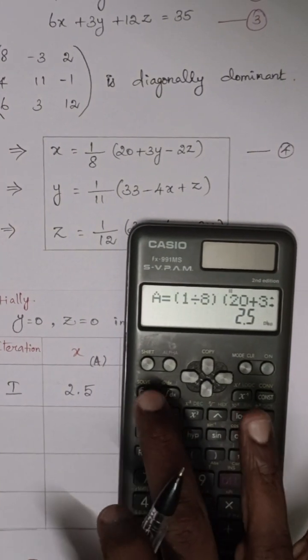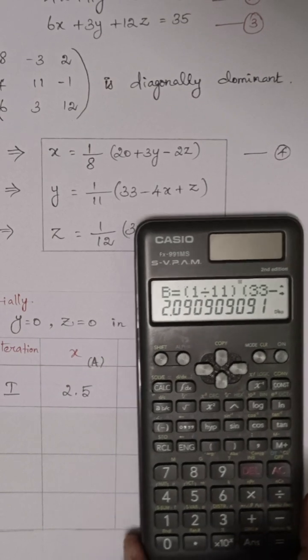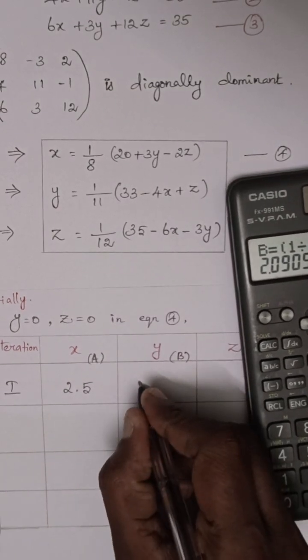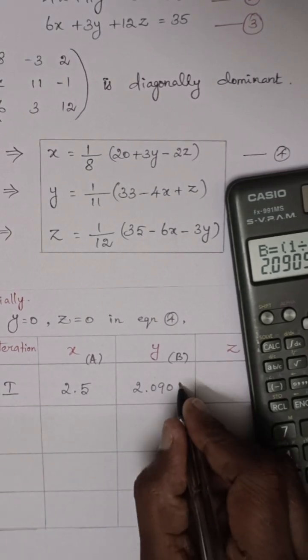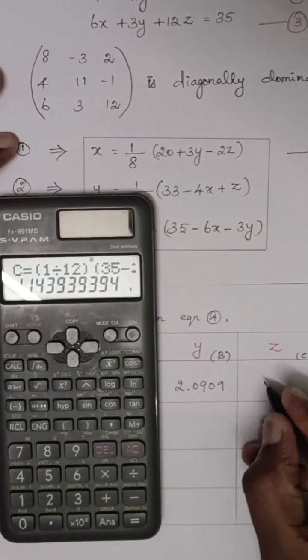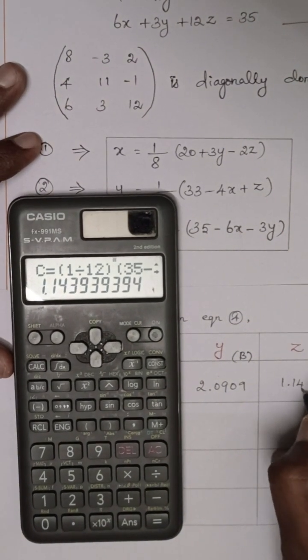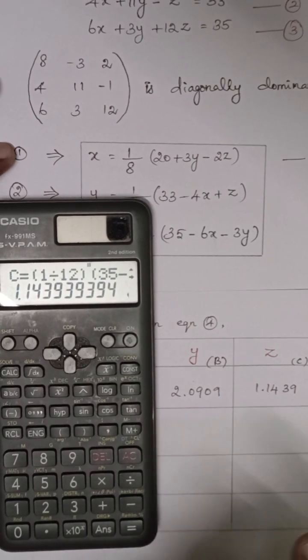And next, b value 2.0909. Then c value 1.1439. So first iteration over.